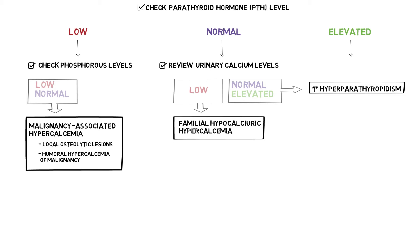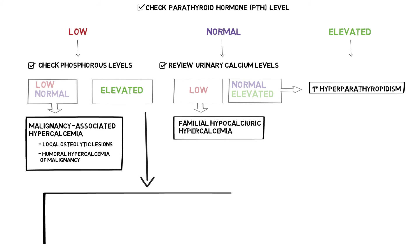The PTHrP activates the parathyroid hormone receptor. Elevated phosphorus can be seen in multiple myeloma — the clue for boards is acute kidney injury and anemia.